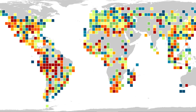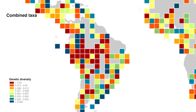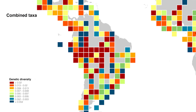We already knew that diversity was higher in the tropics in terms of the number of species they harbour. But what we show in this study is that the tropics not only have the highest number of species, but the species and populations that exist there are also genetically more diverse too. Another important result is that genetic diversity is lower in regions that have been more affected by humans.